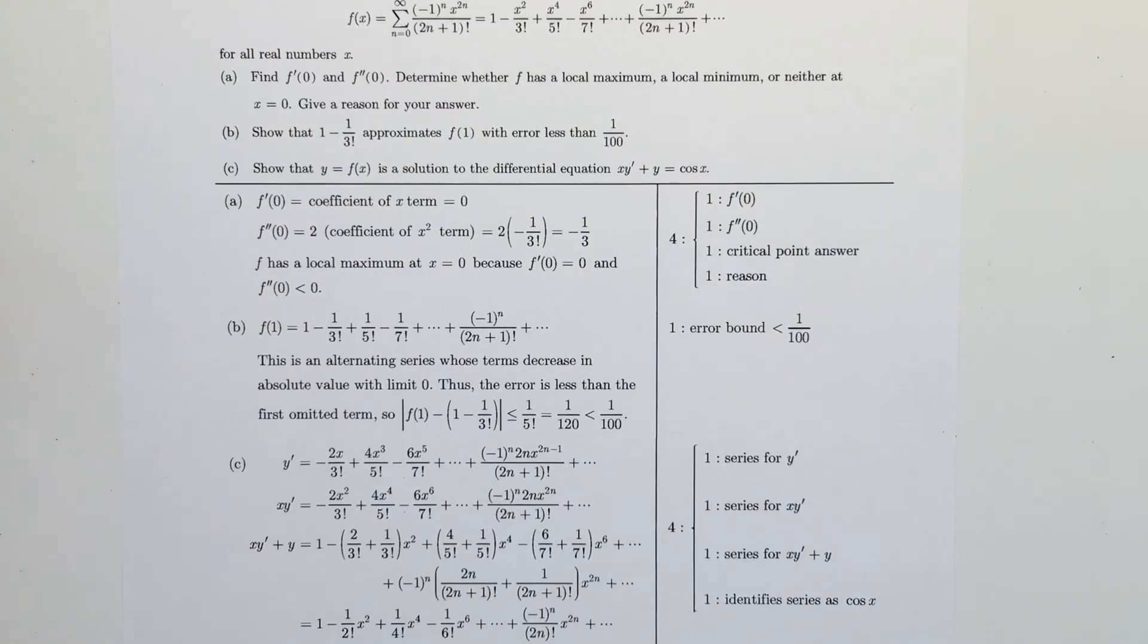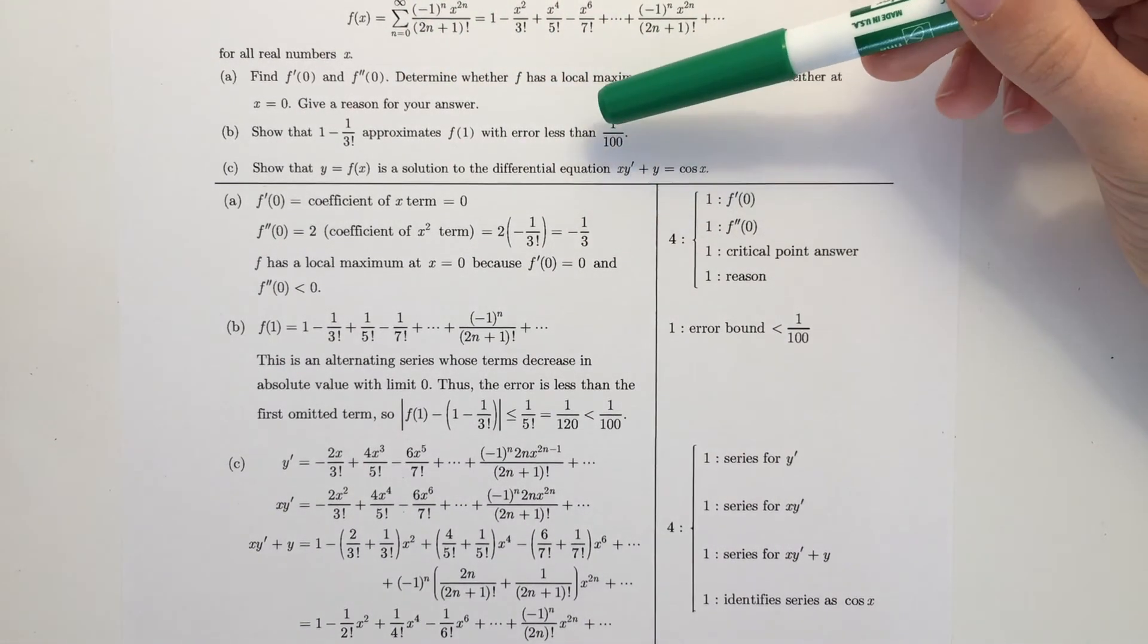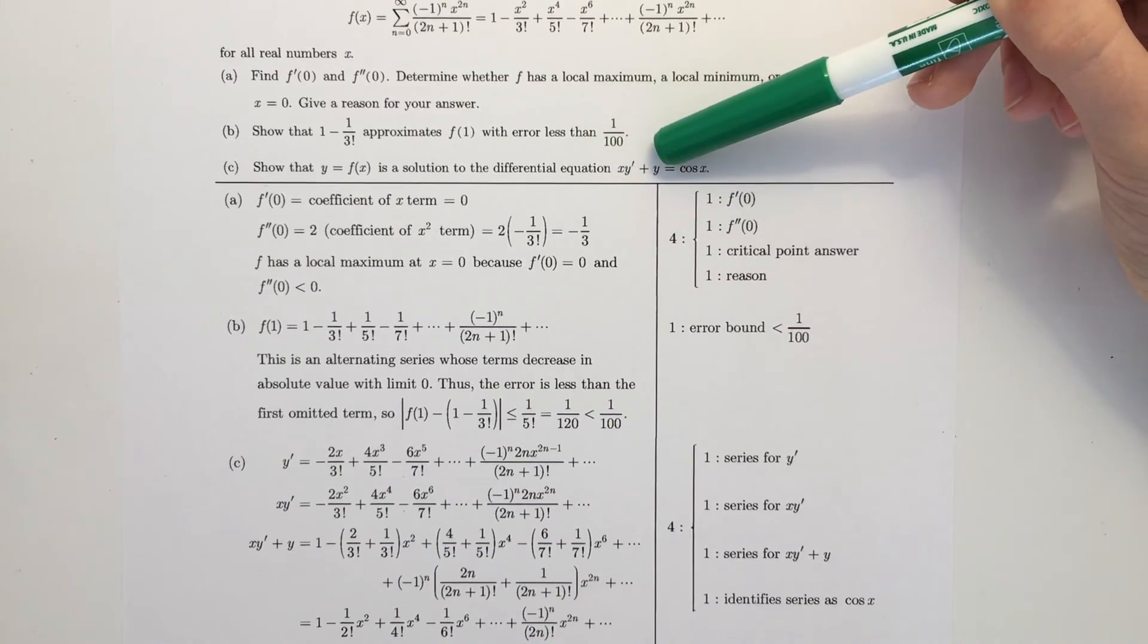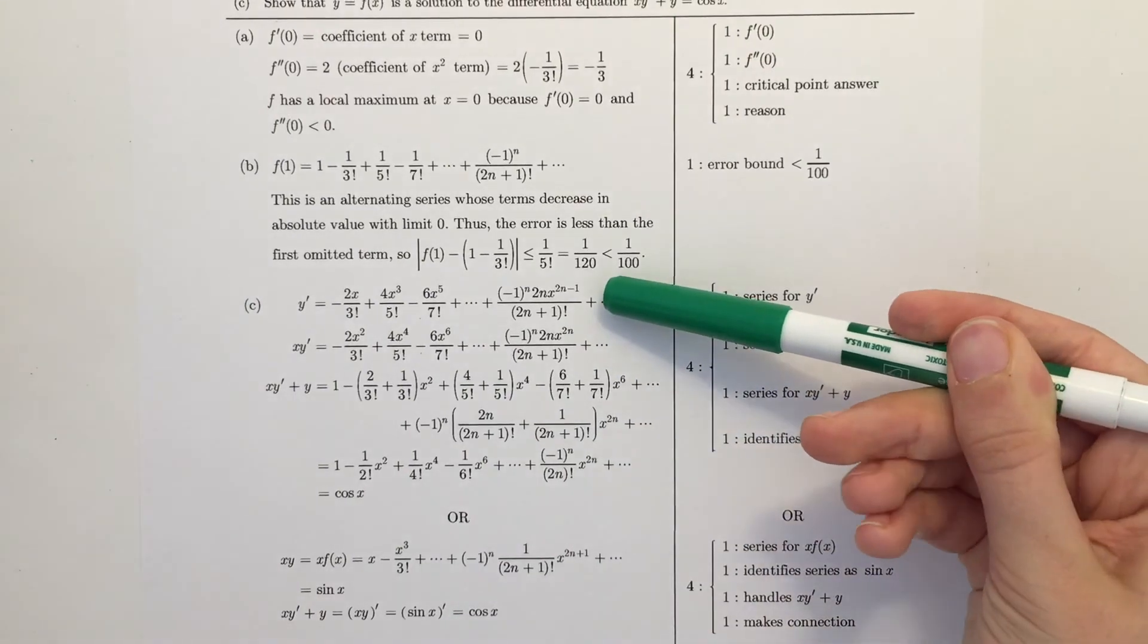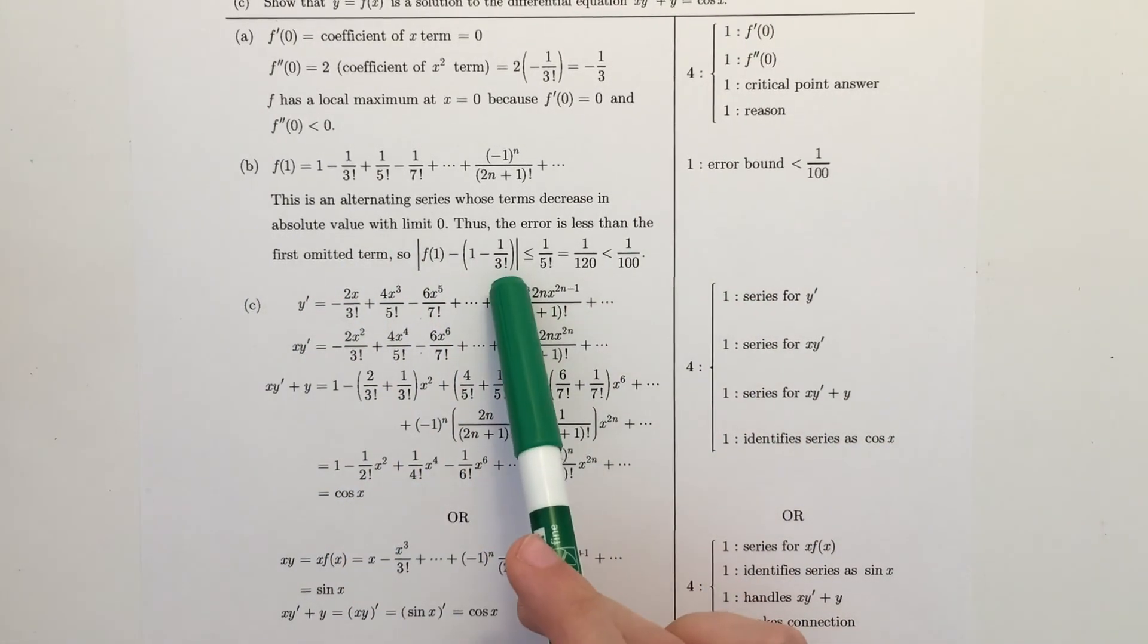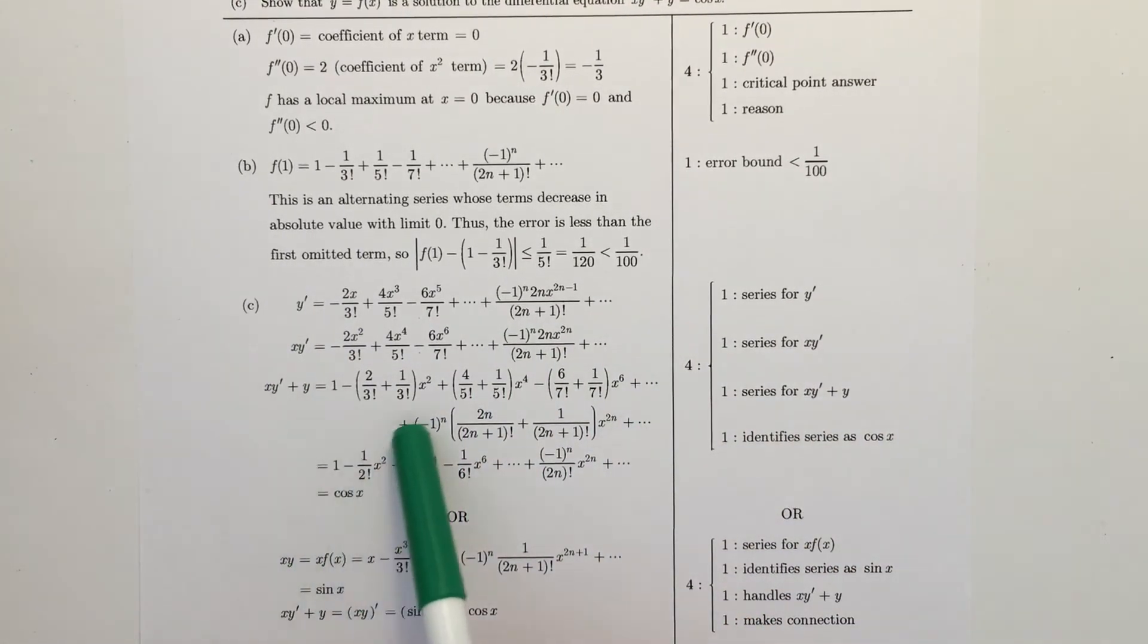Here comes the fun part. Part C. Part C asks us to show that y is equal to f of x is a solution to the differential equation x y prime plus y is equal to cosine of x. Looking at this, I was quite intimidated. But then I realized, just using the series form, I can find y prime, then I can multiply that by x, and then I can add y. And this is exactly what they did. First, they just found y prime, an expanded form as well as the general term, and then they multiplied by x, adding 1 to the exponent of x, and then they added y.